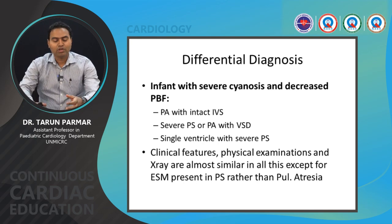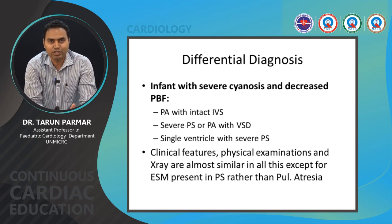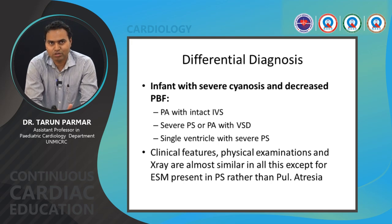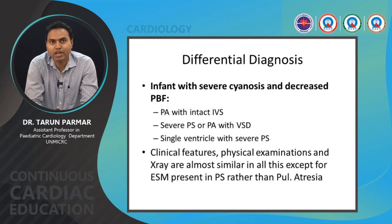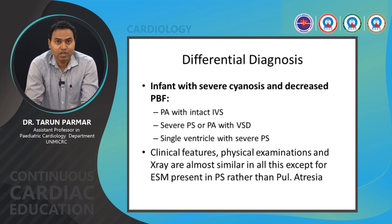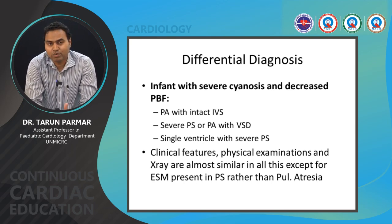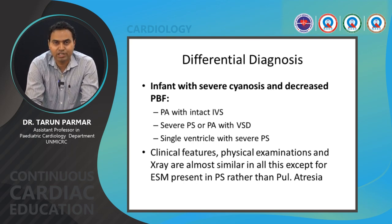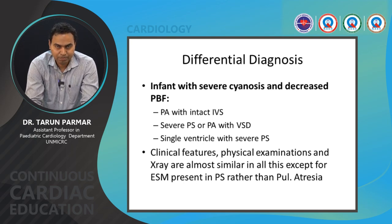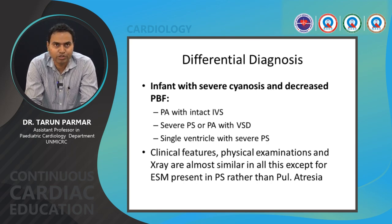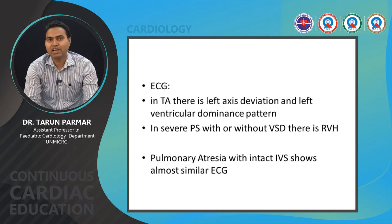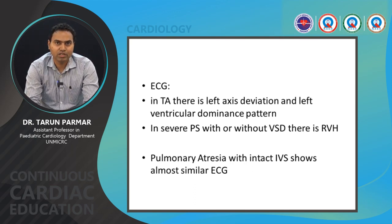For differential diagnosis, all cyanotic CHDs with decreased QP and increased QP can be confused with tricuspid atresia. In the decreased QP group, conditions like pulmonary atresia with intact ventricular septum, severe pulmonary stenosis, pulmonary atresia with VSD, or single ventricle with pulmonary stenosis can present similarly. Clinical features, physical examination, X-ray, and ECG may be similar, except that an ejection systolic murmur is more typical of pulmonary stenosis rather than pulmonary atresia. On ECG, tricuspid atresia shows left axis deviation and LV dominance, while severe PS with or without a VSD shows RVH.